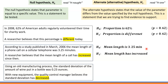For H0 we will always use an equal sign, because the null hypothesis states the parameter is equal to a specific value. The notation for population mean is mu. So H0: mu = 3.25. How do we describe the alternative hypothesis? What symbol can we use for 'increased'?